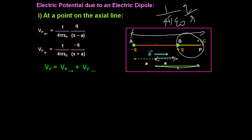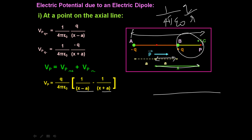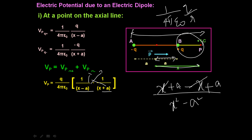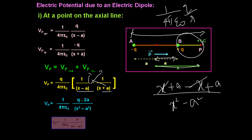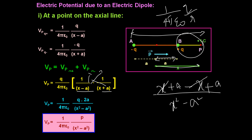The total potential is found by taking the algebraic sum of the two. Taking (q / 4πε₀) as a common factor, we get (1/(x−a)) minus (1/(x+a)). Taking the LCM — since (x−a)(x+a) = x²−a² — the numerator becomes (x+a) − (x−a), which simplifies to 2a. So the equation becomes V = (1 / 4πε₀) × (q × 2a) / (x² − a²). Since q × 2a is nothing but the dipole moment p, we can write V = (1 / 4πε₀) × p / (x² − a²).